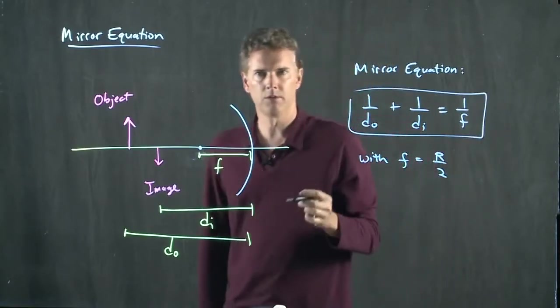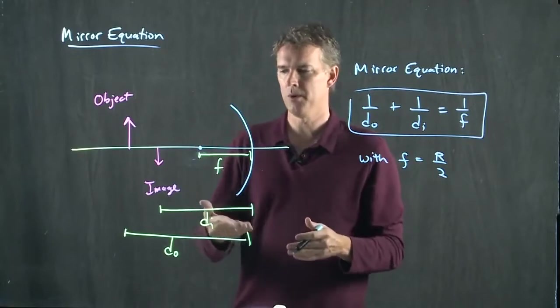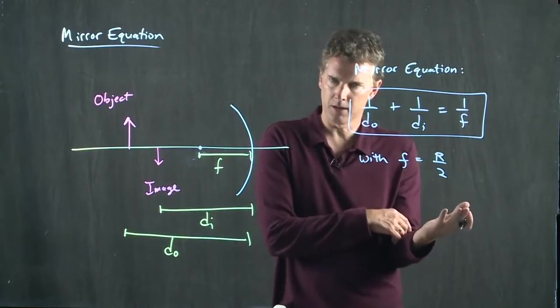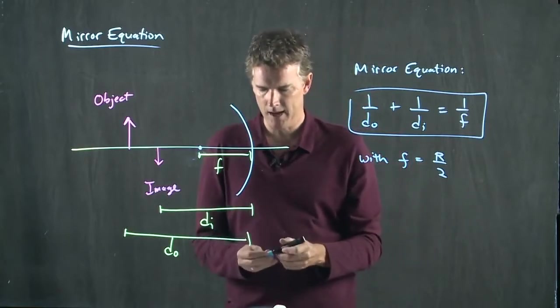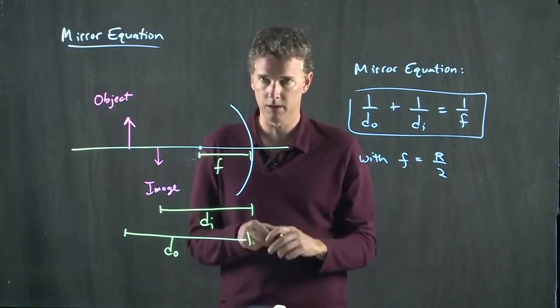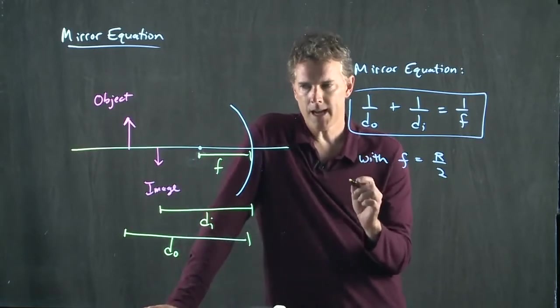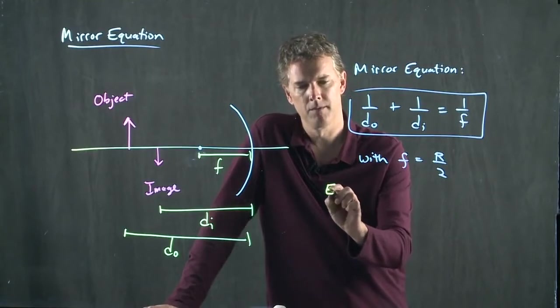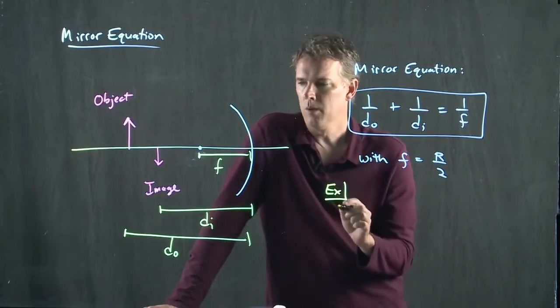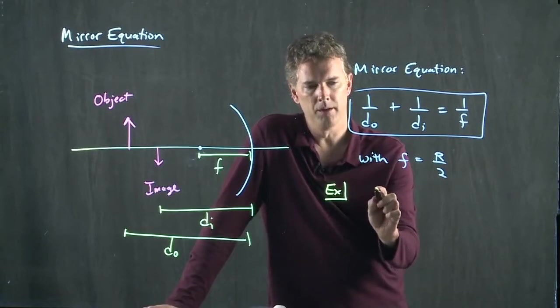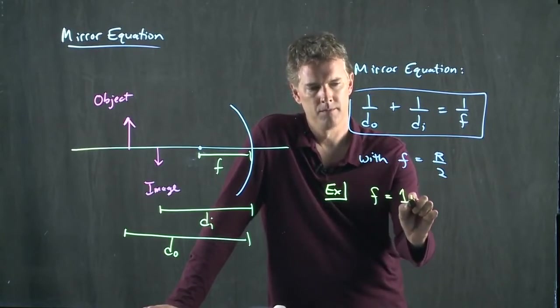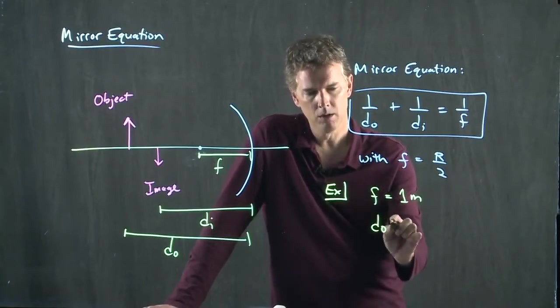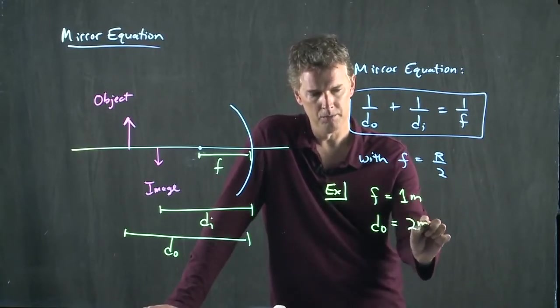This thing is going to help you determine where DI is. So let's take a look at the last clicker question that we just looked at and verify that this equation is in agreement with that. In that equation, we had the following. We had that the focal length was 1 meter. But we also had that DO was 2 meters.